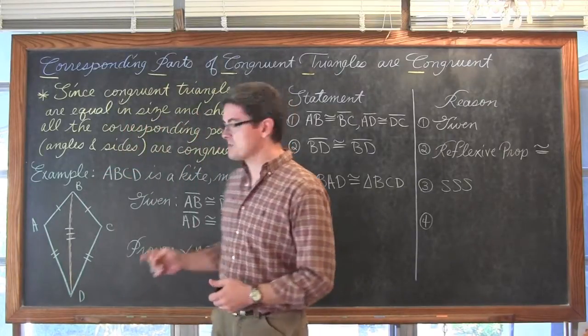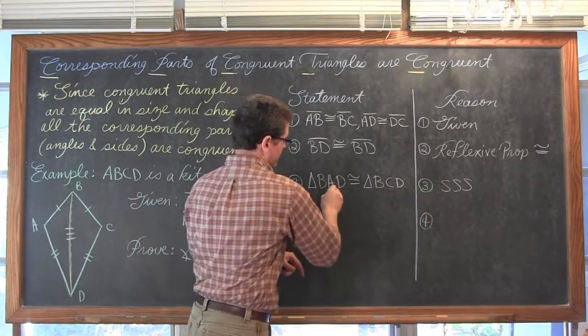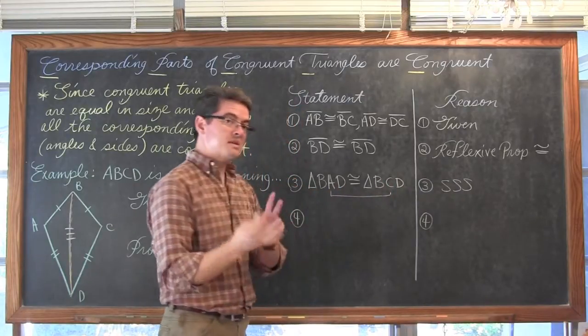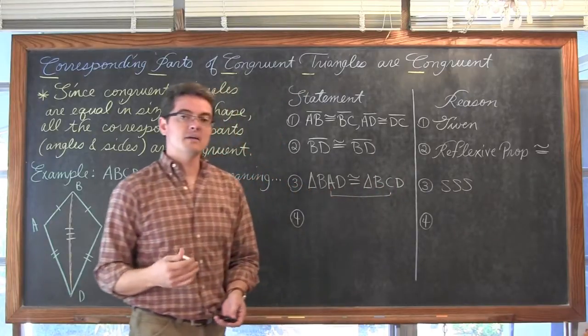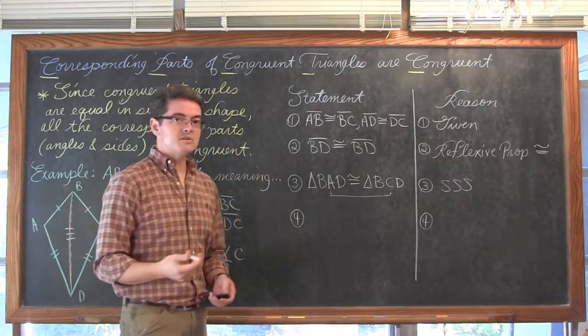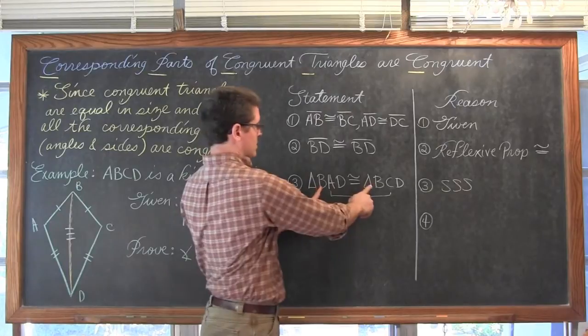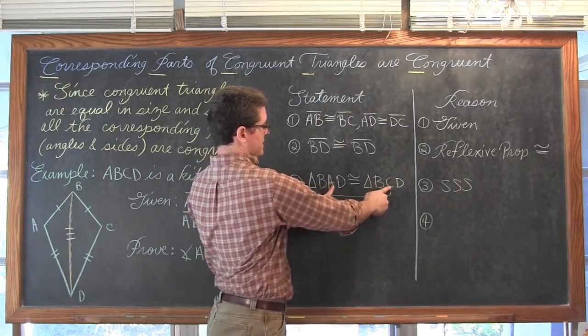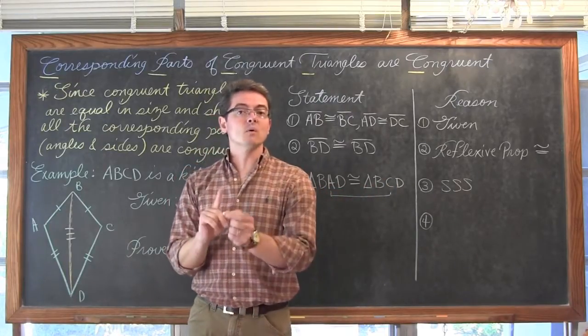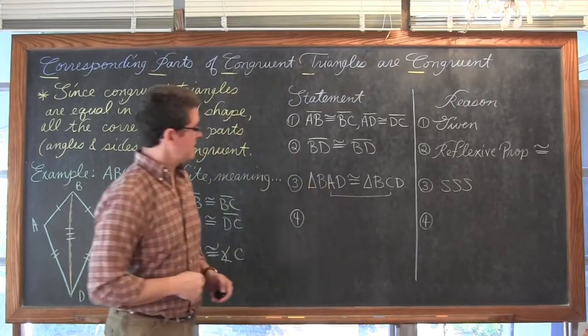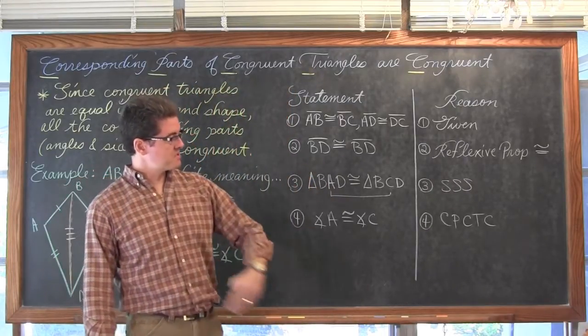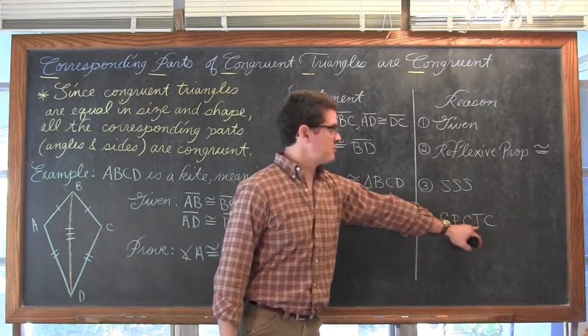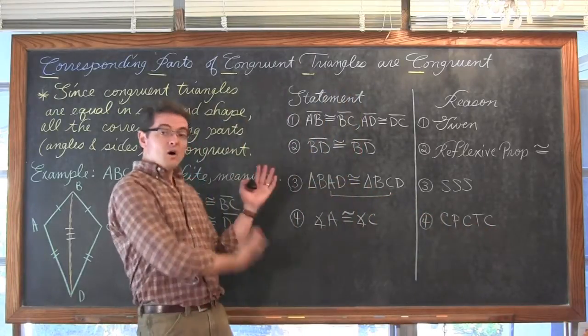And you will also notice that my corresponding angles which are congruent are in the same position, relative position, the second letter of both of my congruency names for these two triangles. Again, it is very important that you get all of these corresponding angles to match up as the congruent angles. Alright, so angle A is congruent to angle C by the corresponding parts of congruent triangles are congruent. And our proof is done.